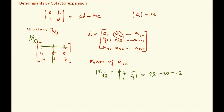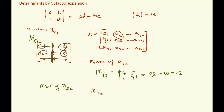Another example: the minor of entry A_32 means we look at the third row and the second column. Eliminating that row and column, what's left over is the submatrix [1, 4; 3, 5]. So M_32 is the determinant of [1, 4; 3, 5], which is 5 minus 12, equal to minus 7. That is how we calculate minor entries.